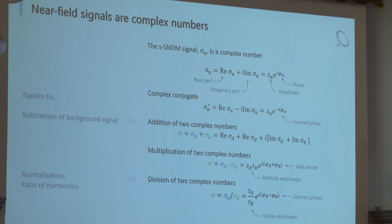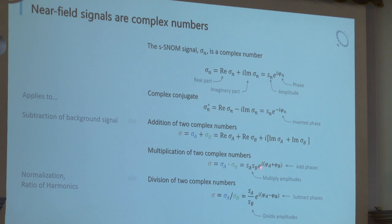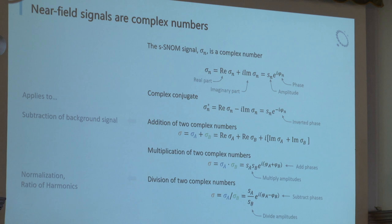For multiplication and division of complex numbers, you can use the amplitude-and-phase picture. The amplitudes multiply, and importantly the phases add together — they do not multiply. For division, we divide the amplitudes and subtract the phases. These rules are useful when processing SNOM images, such as background signal subtraction, normalization, or harmonic ratios.